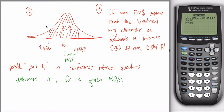You go through steps one, two, and three and get your conclusion: I'm 80% certain that the population average diameter of redwoods is between 9.456 feet and 10.544 feet. Suppose you're a biologist who looks at trees and wants a better estimate — by better, I just mean a smaller margin of error.